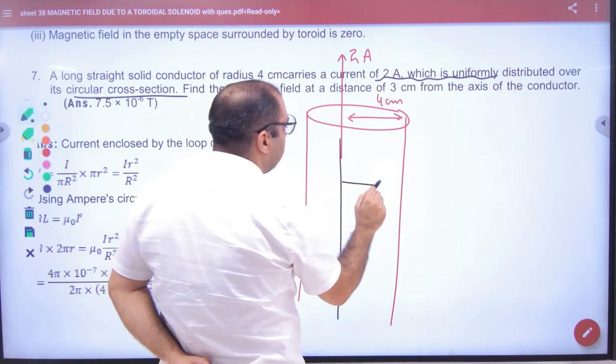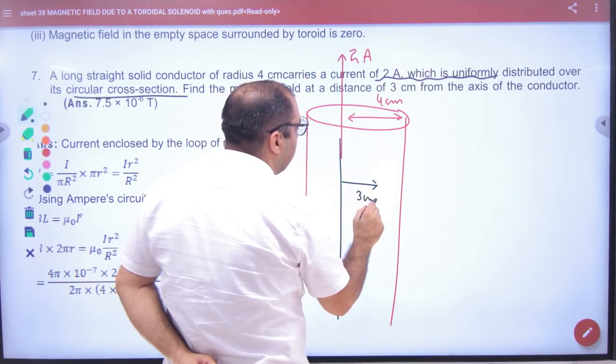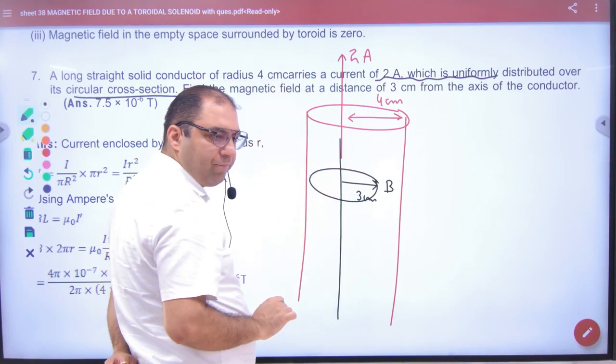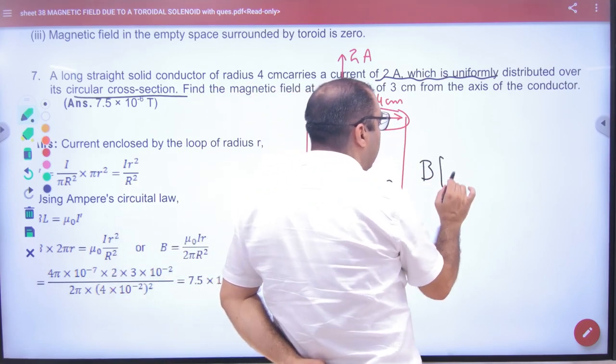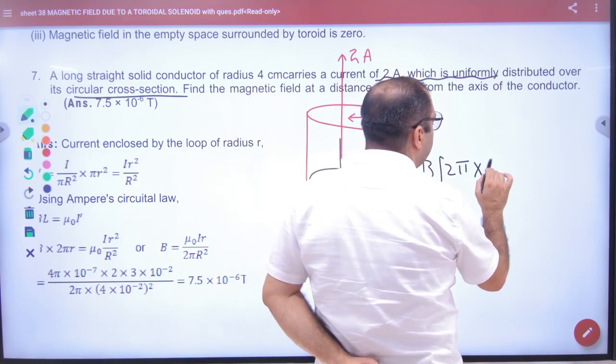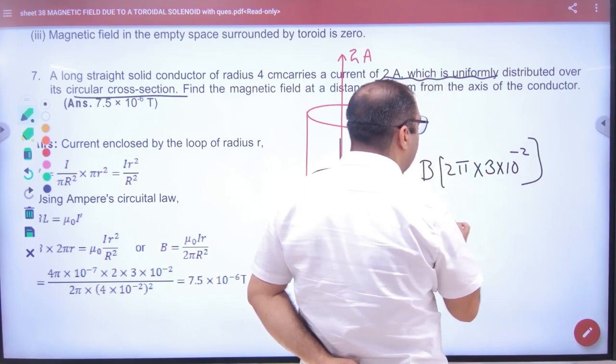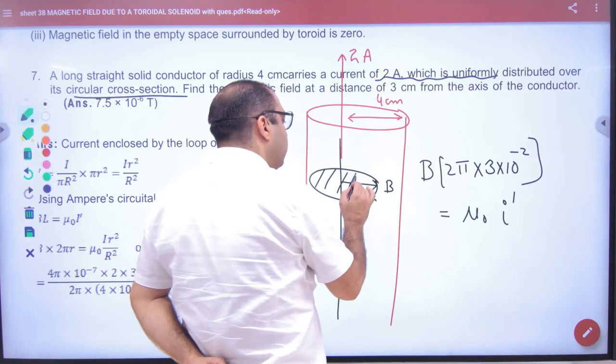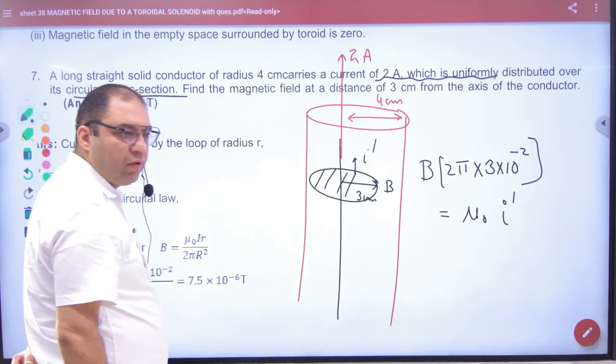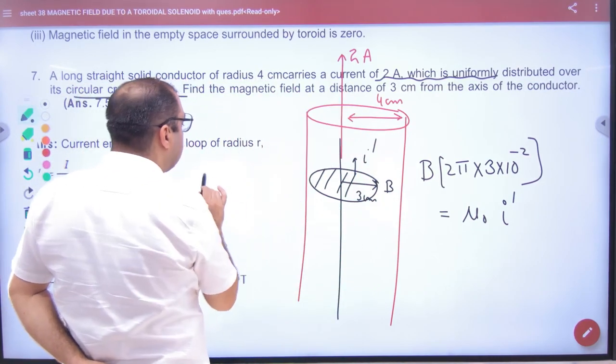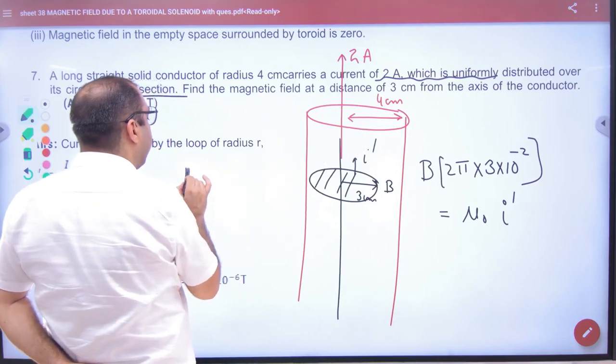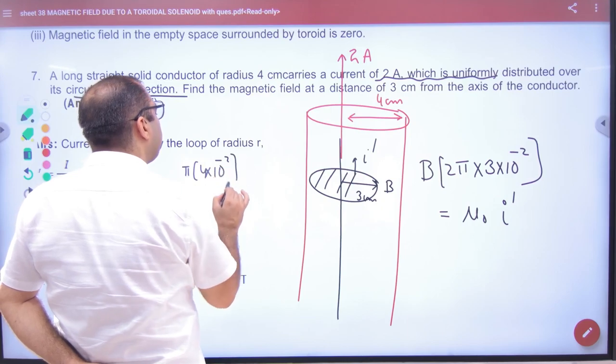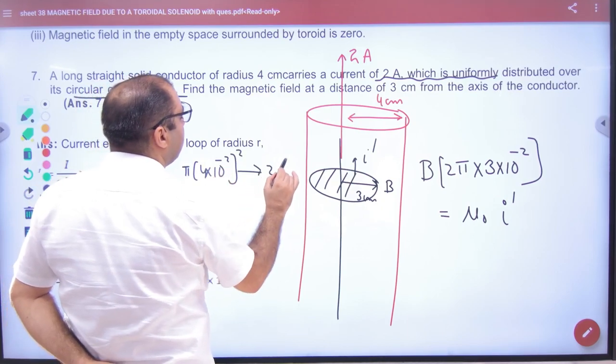So what will you do? Draw a circle. Ampere's circuit law: B into 2π into 3 into 10 to the power minus 2, equals μ₀ times how much current is passing from this portion, I dash. If this is 4 cm radius, the area is π into 4 into 10 to the power minus 2 squared. Current value is 2 ampere.